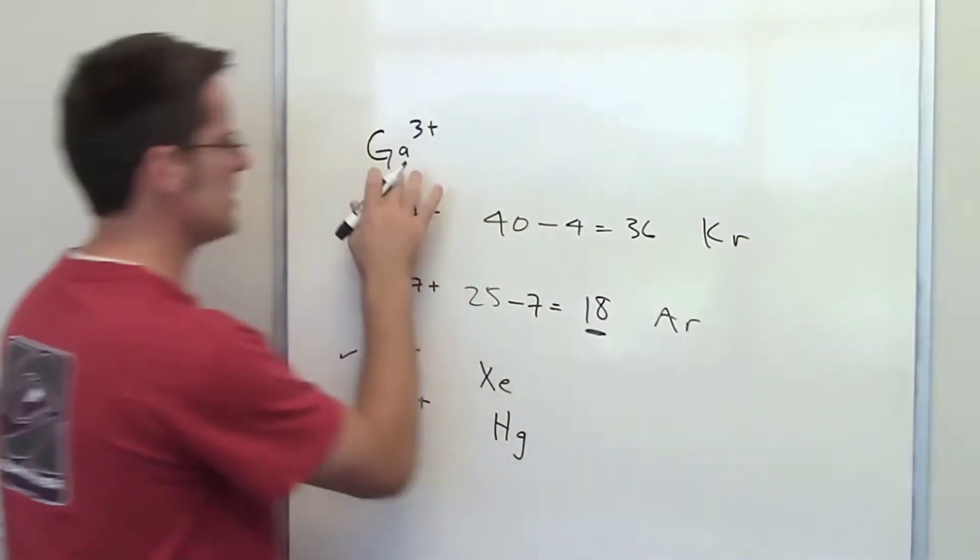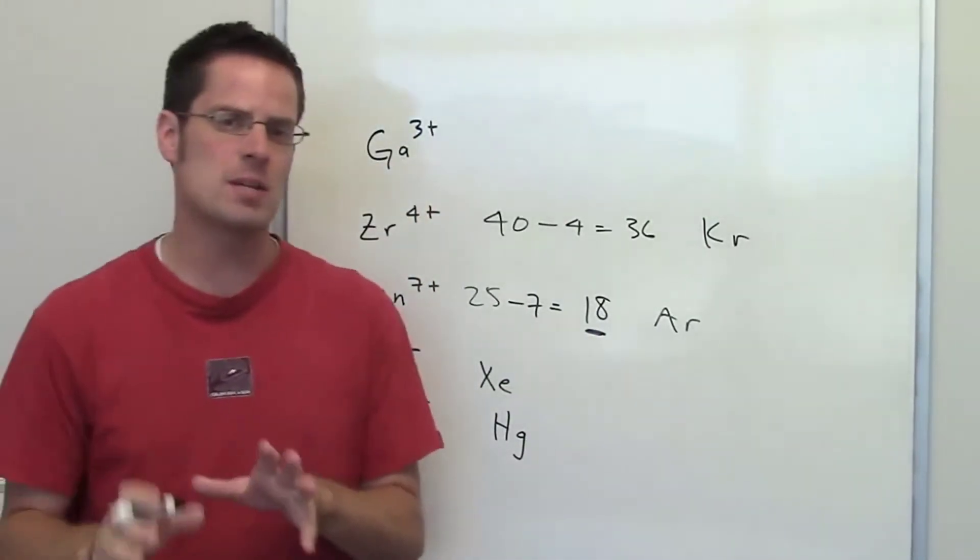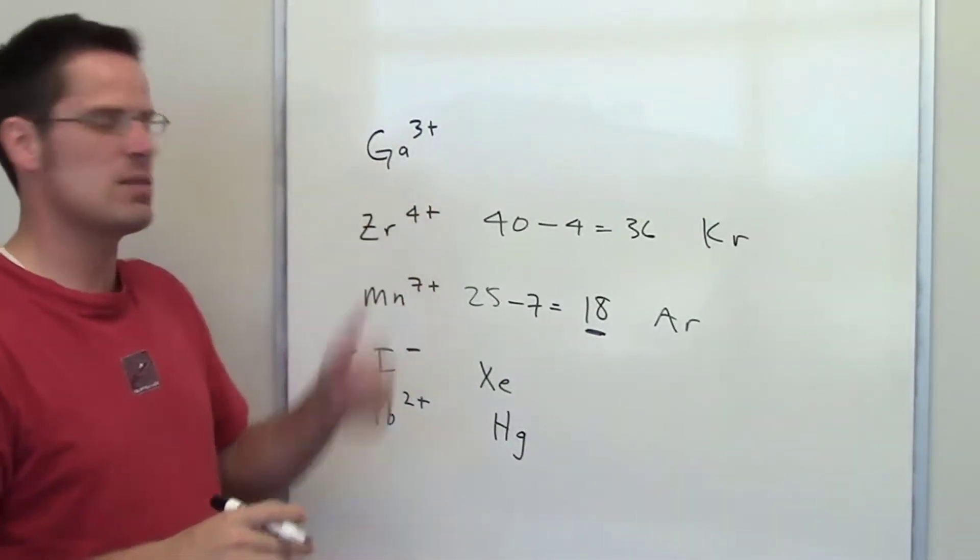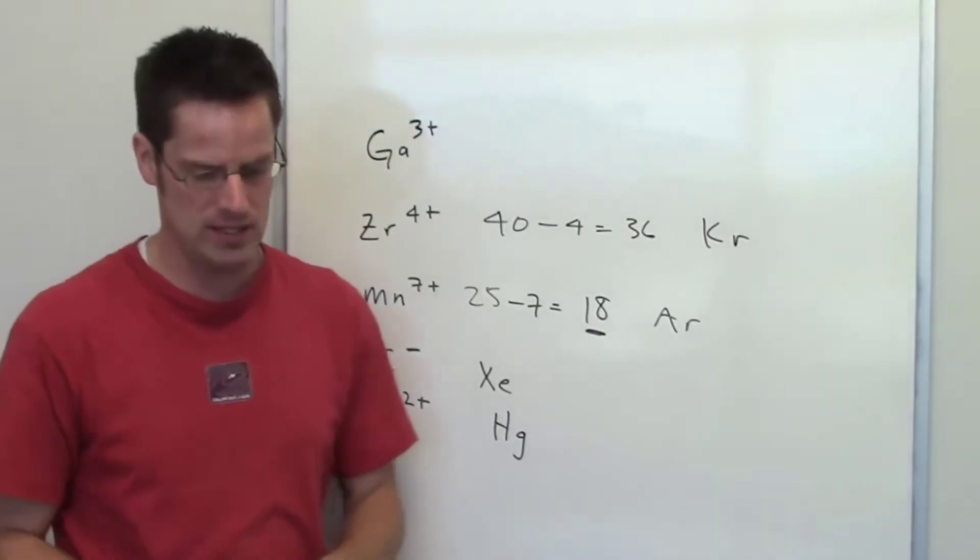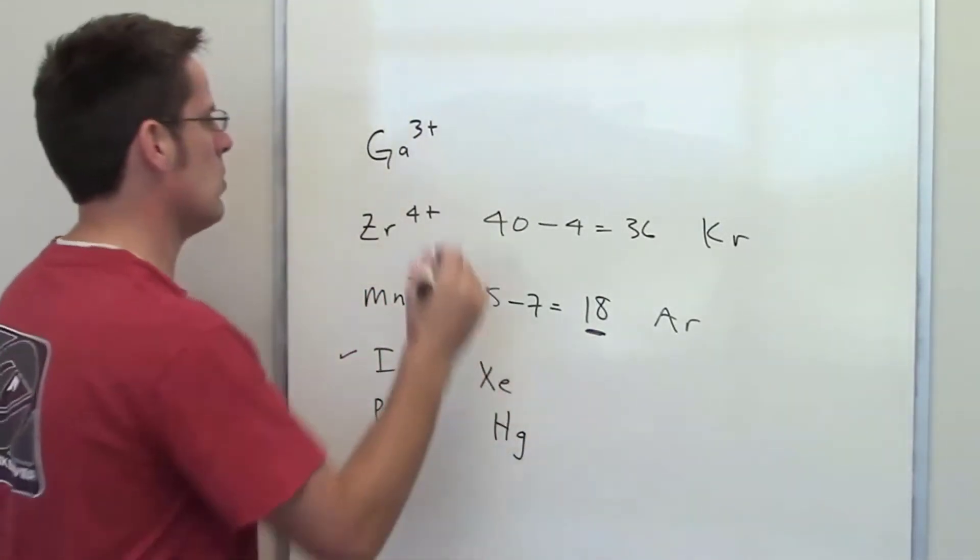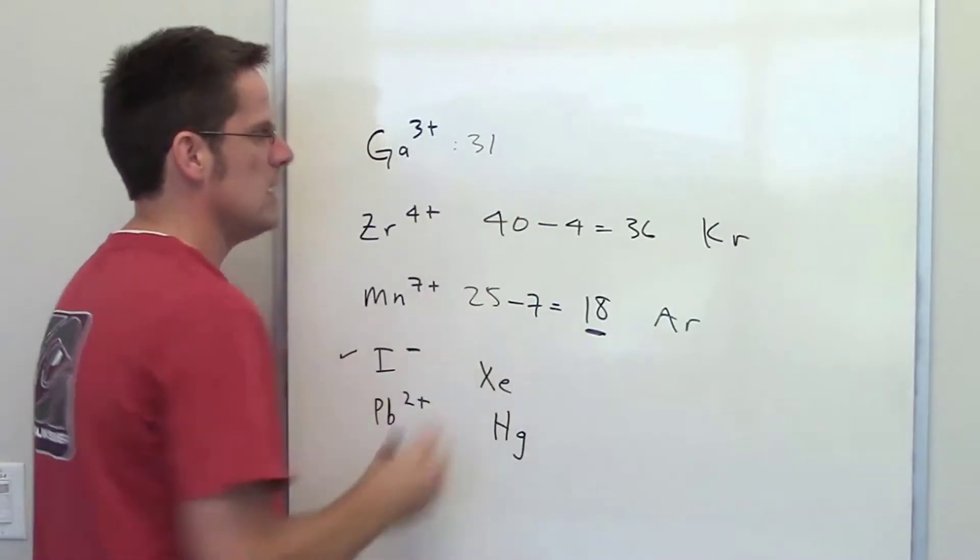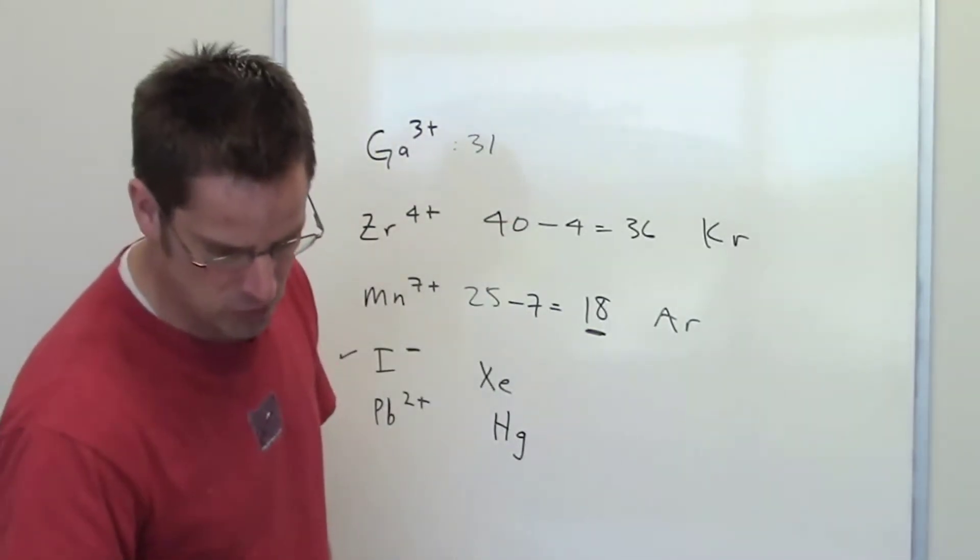I wanted to end with gallium 3+, and the reason is because I frankly think that one is the most confusing and difficult of this lineup. Gallium is element number 31 on the periodic table. If you write out gallium's electron configuration,